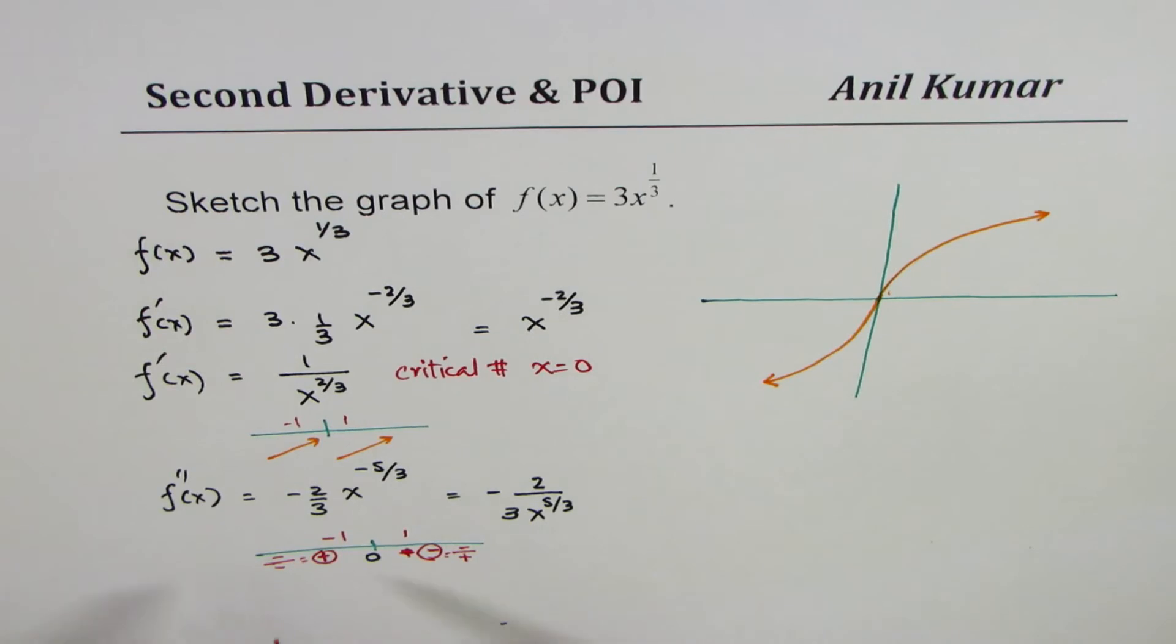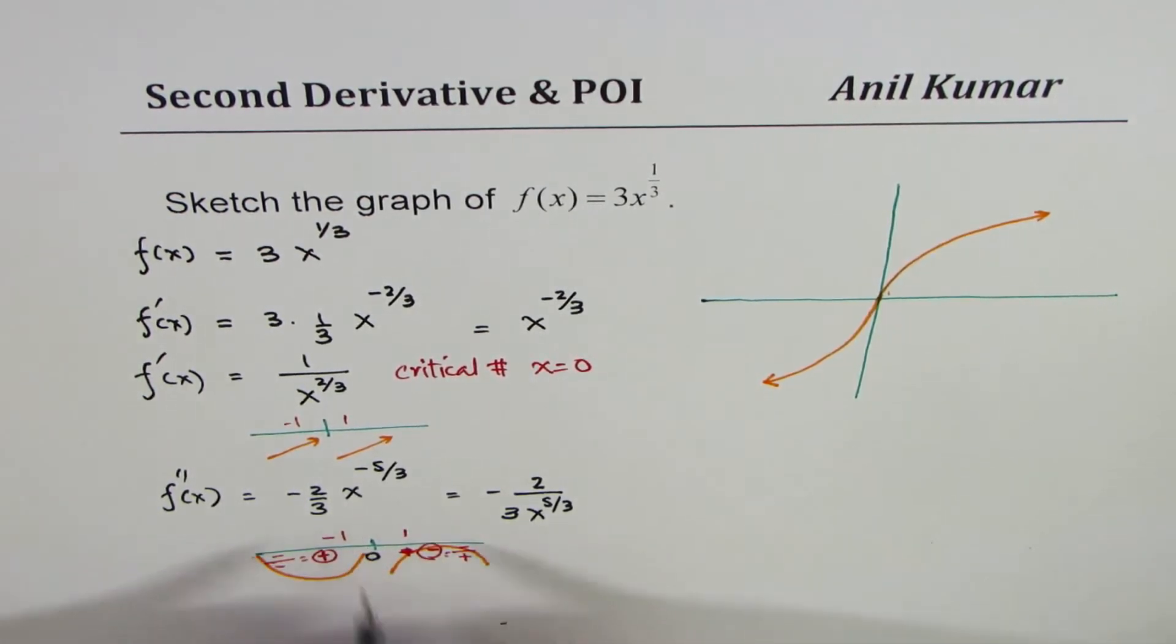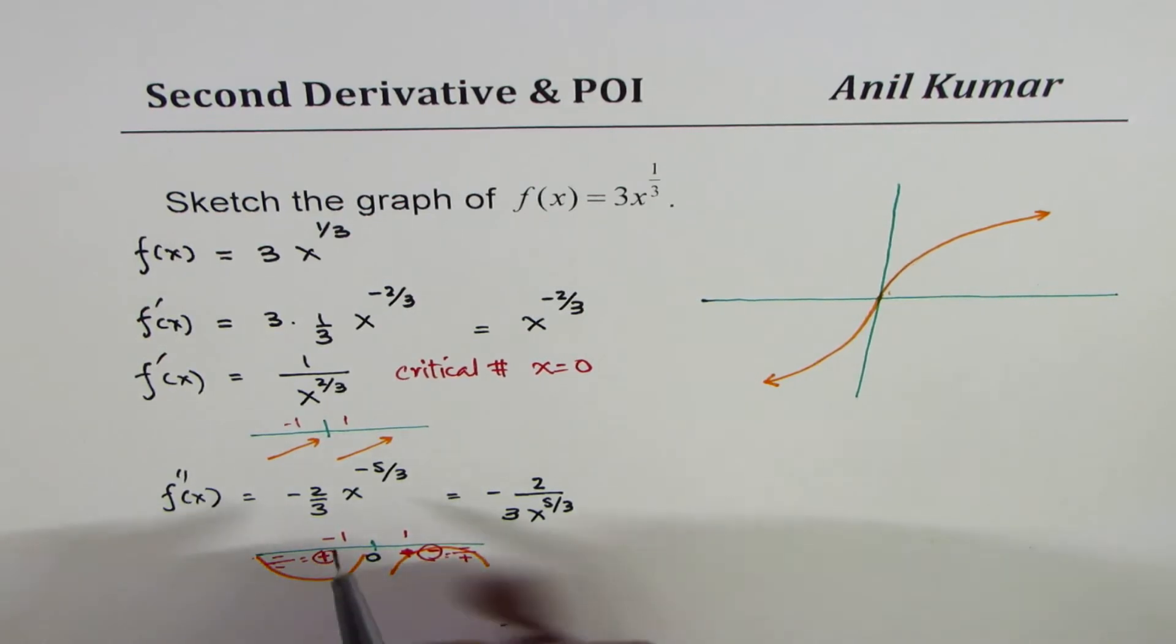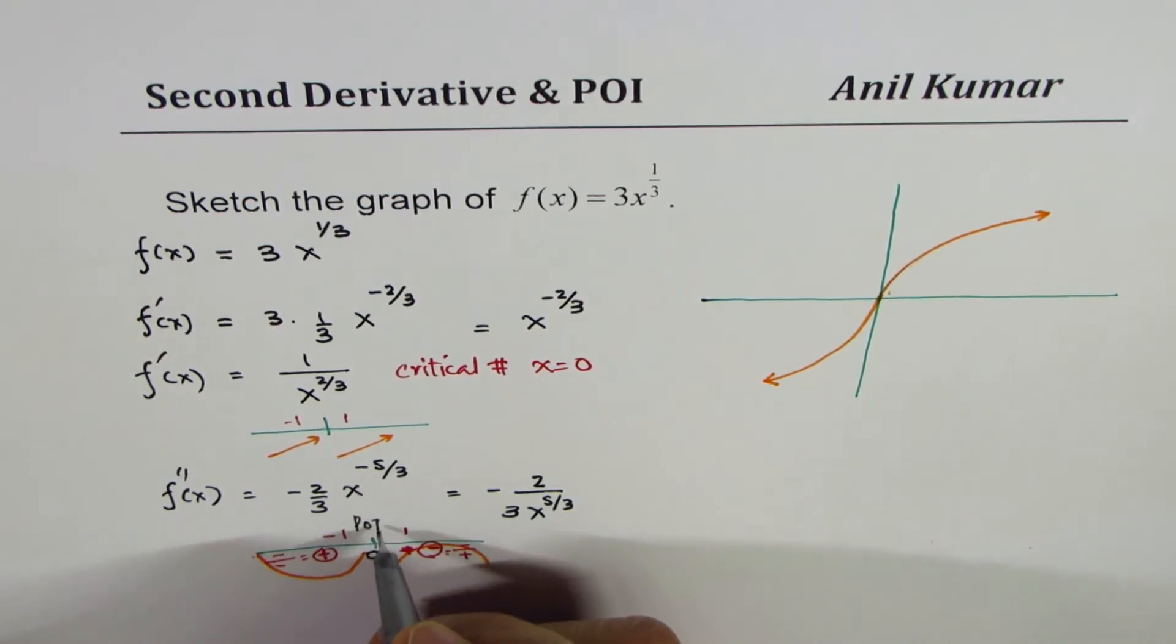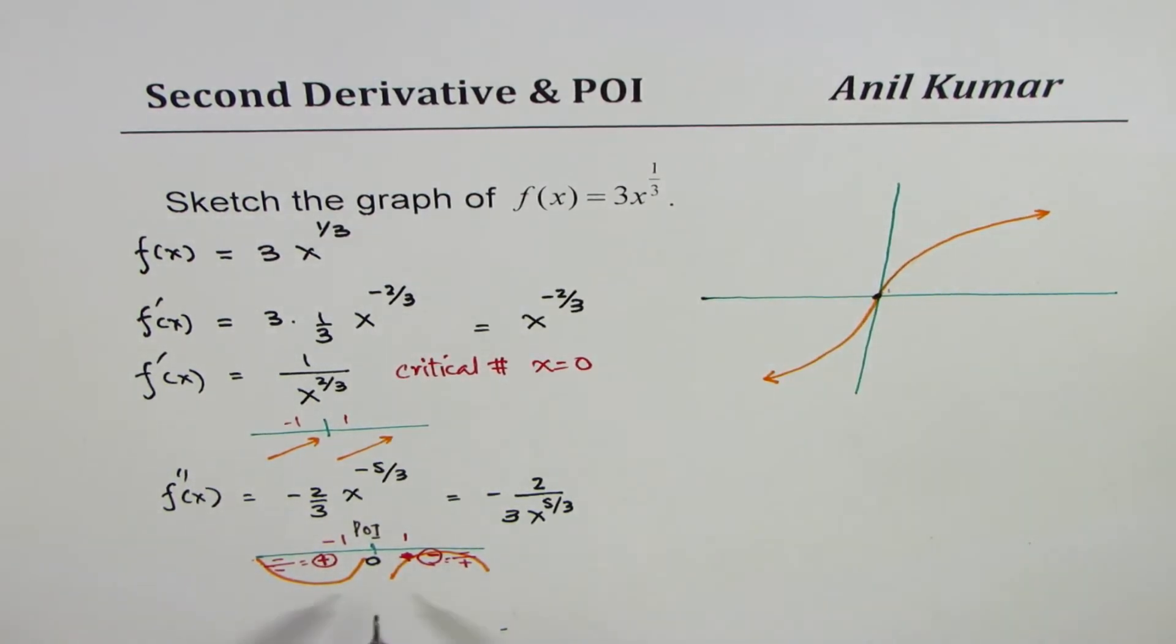Now, since we have positive, the shape of the curve, concavity, will be concave up. Since this is negative, it will be concave down. So we do have a point of inflection right at x equals to 0. So we do have a point of inflection as x equals to 0.